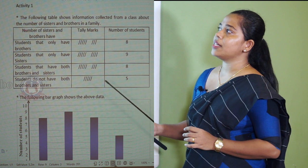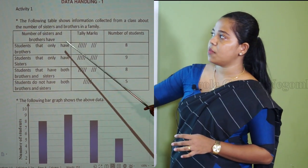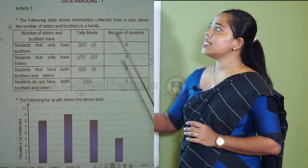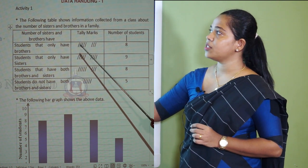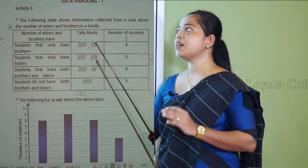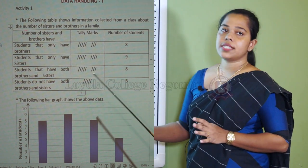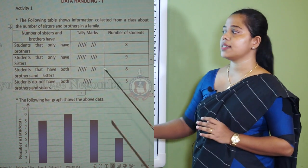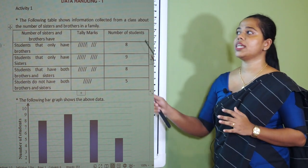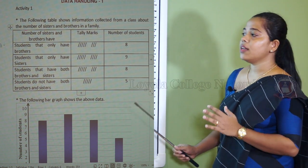Here in this table I have given some information collected from a class about the number of sisters and brothers in a family. The table shows tally marks and the number of students. Students that only have brothers: the number is 8. Normally tally marks are shown 5 by 5, so the first 5 is drawn here and the remaining 3 here. 9 students only have sisters, 8 students have both brothers and sisters, and 5 students do not have both brothers and sisters. When we enter information in a table like this, we call it data.